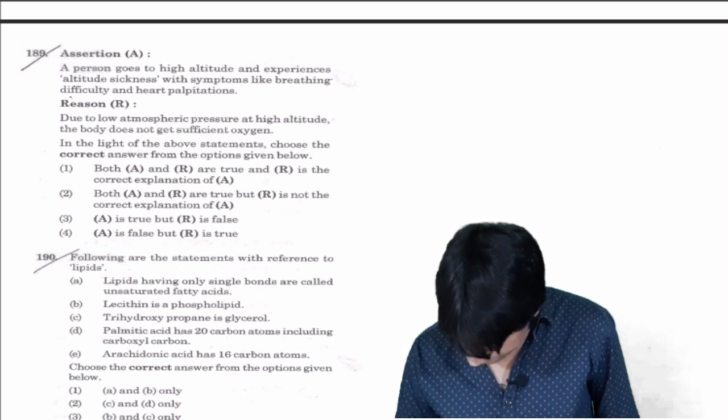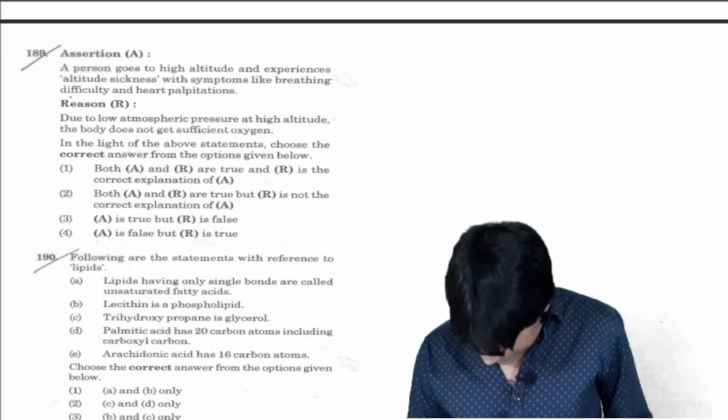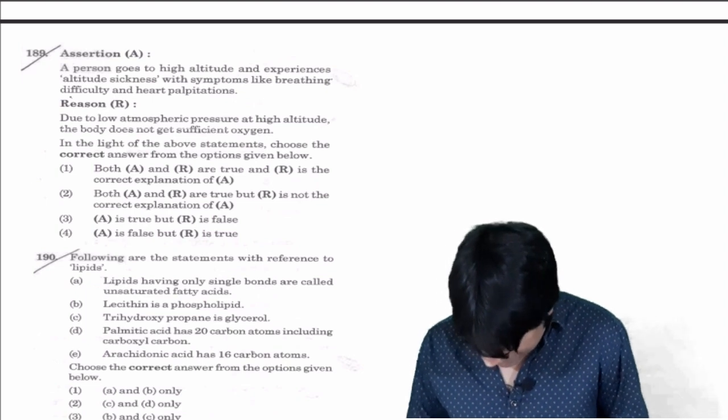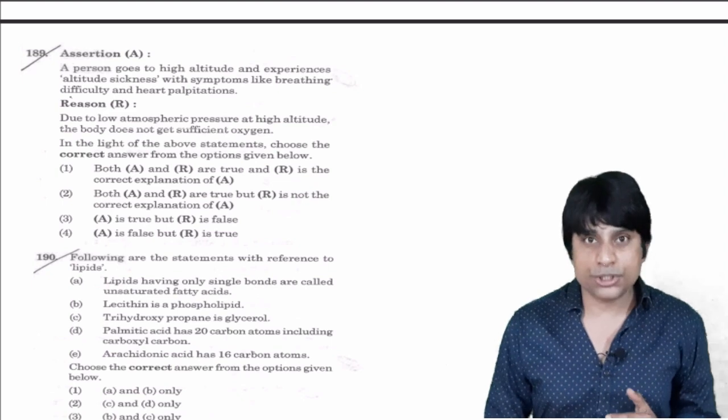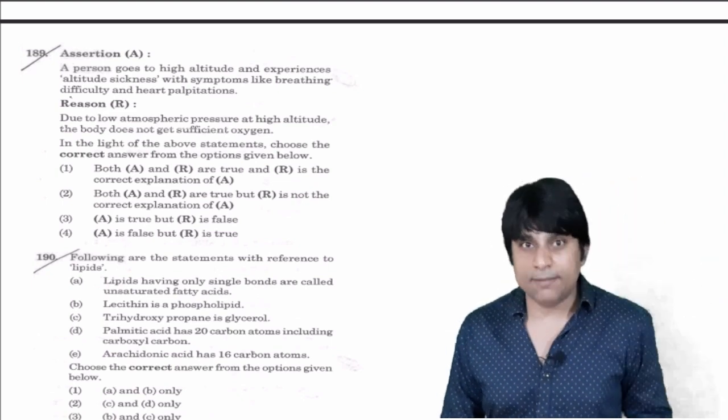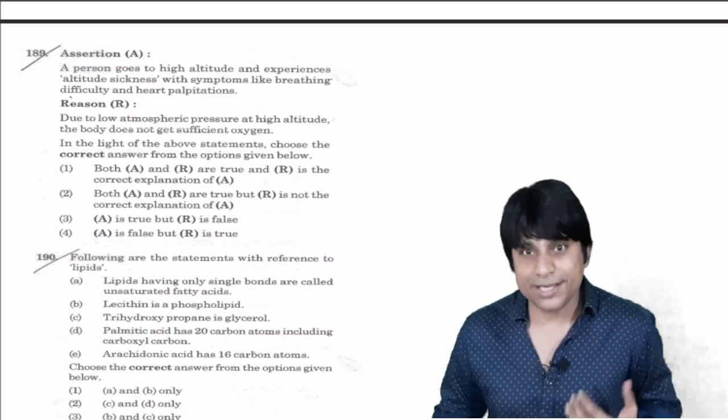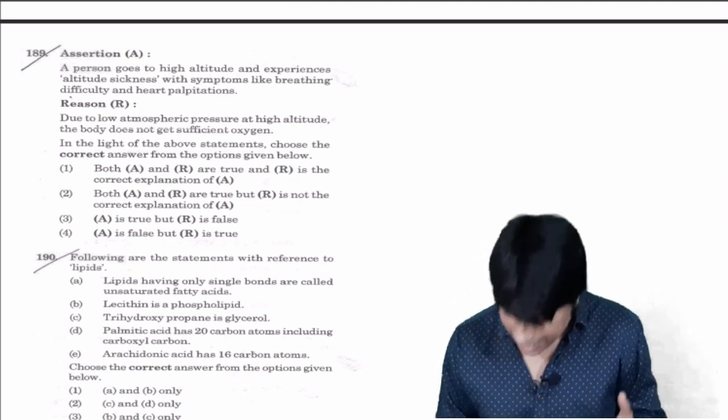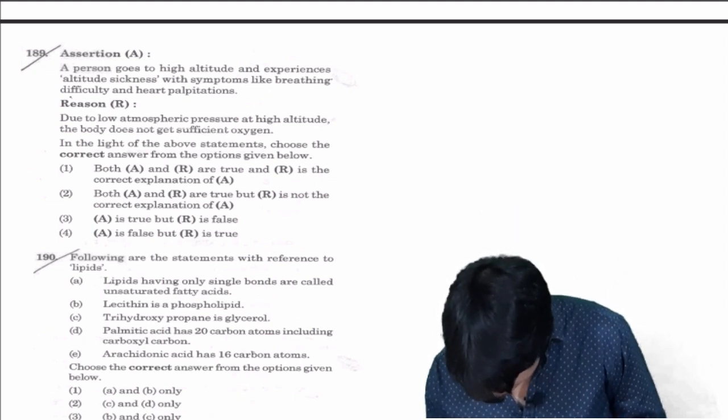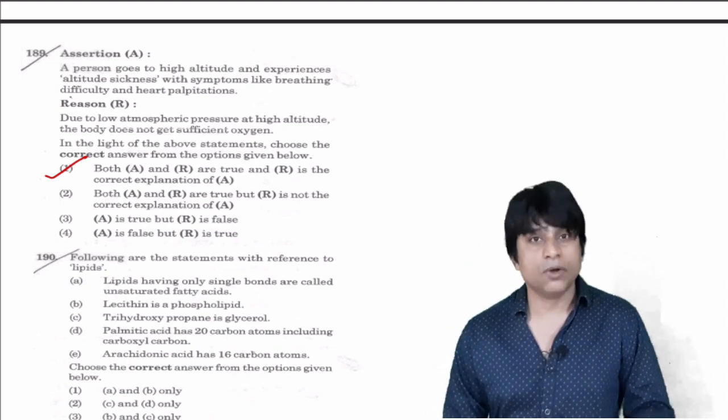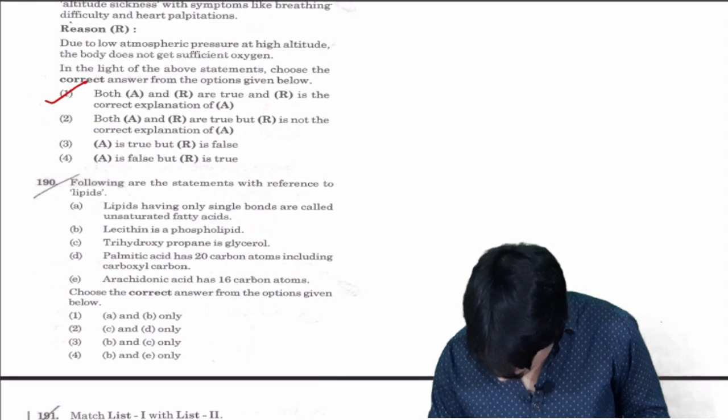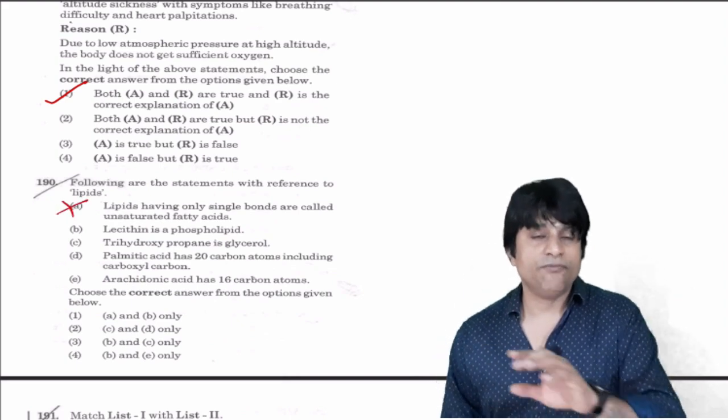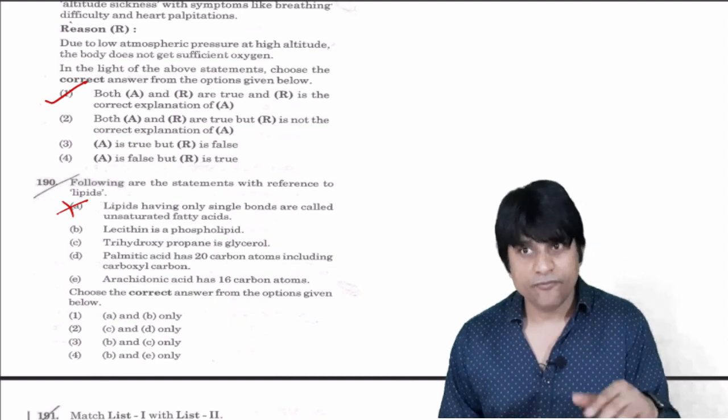A person goes to high altitude and experiences altitude sickness with symptoms like breathing difficulty and heart palpitations, correct, because at high altitudes the partial pressure of oxygen will come down. But the amount of oxygen is same, partial pressure will come down. Due to low atmospheric pressure at high altitudes the body does not get sufficient oxygen, correct answer. So both A and R are true and R is the correct explanation. Answer is one.